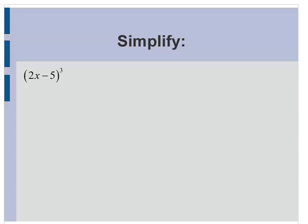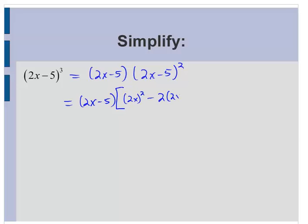Now what if I had something like this? 2x minus 5 cubed. Well, isn't that the same as 2x minus 5 by 2x minus 5 squared? If you think of your rules for exponents. So I'm going to leave the first 2x minus 5 on the side. Now 2x minus 5 squared would be 2x squared minus 2 by 2x by 5 plus 5 squared, using the pattern developed in the previous slide. Or two slides ago, I suppose. So I have 2x minus 5 by 4x squared minus 20x plus 25.